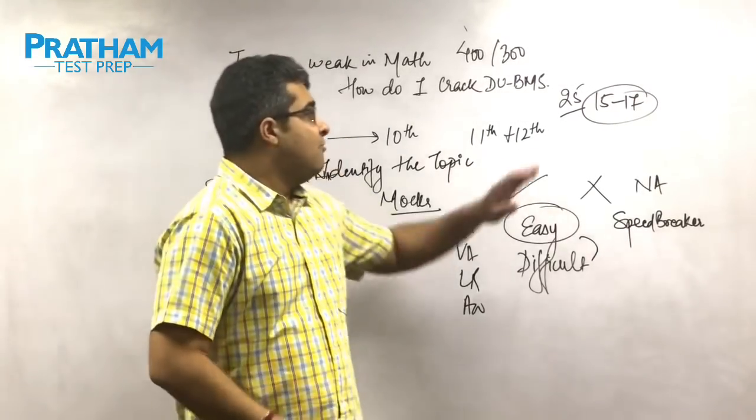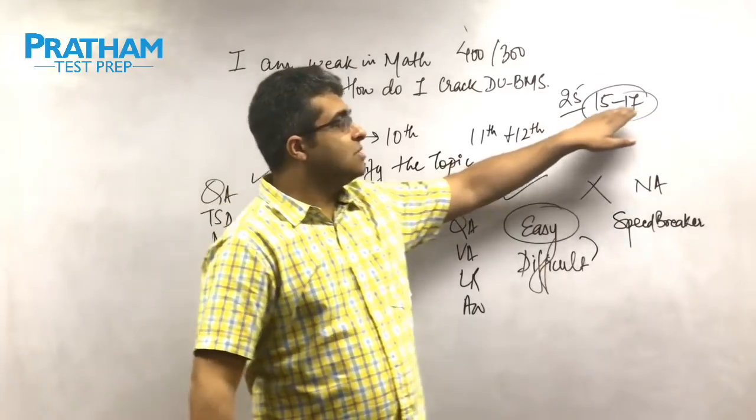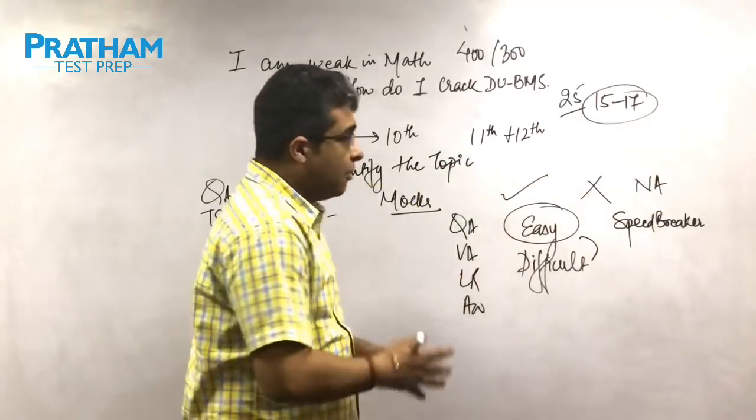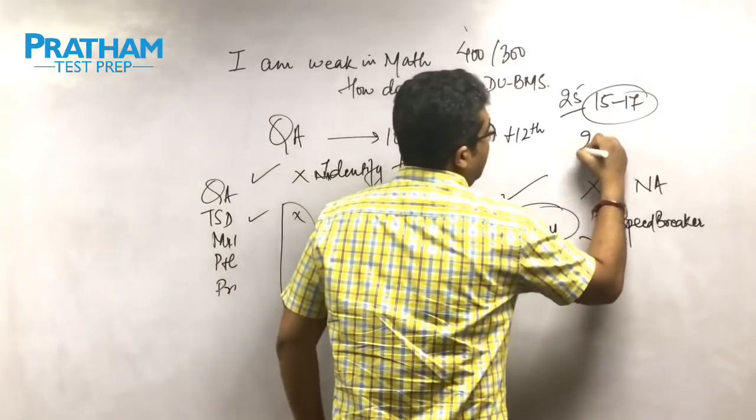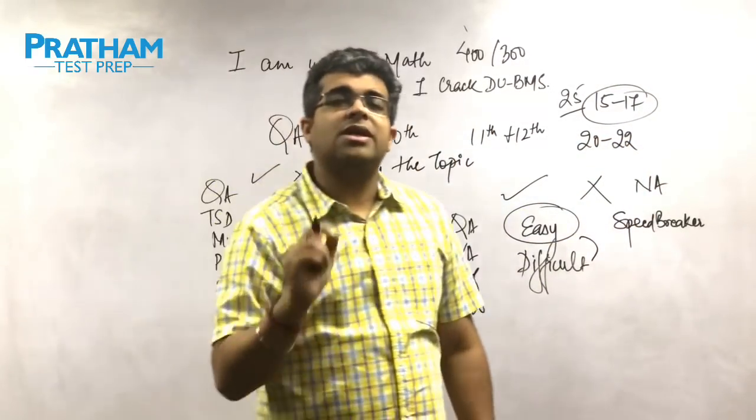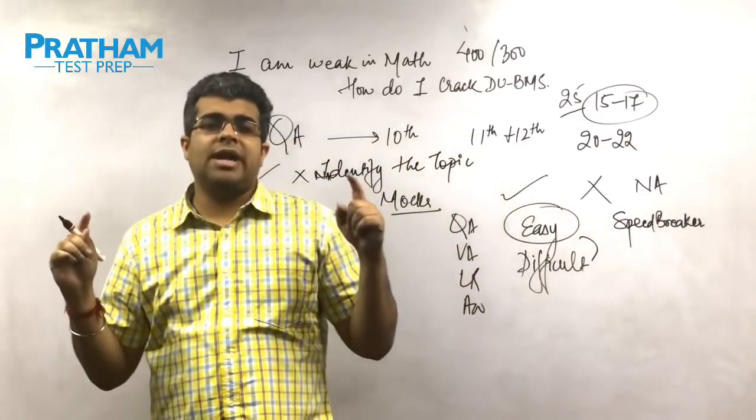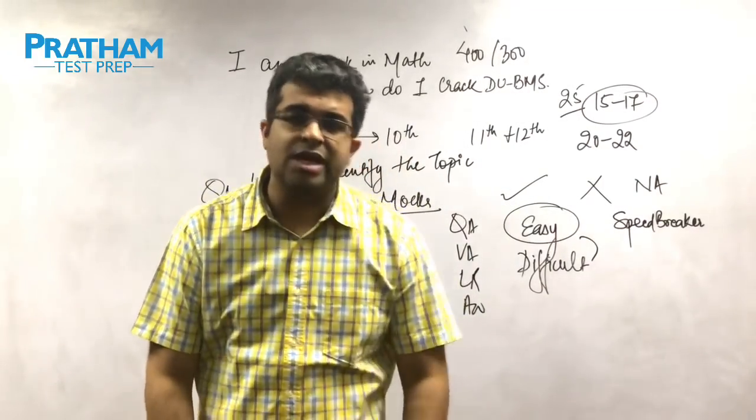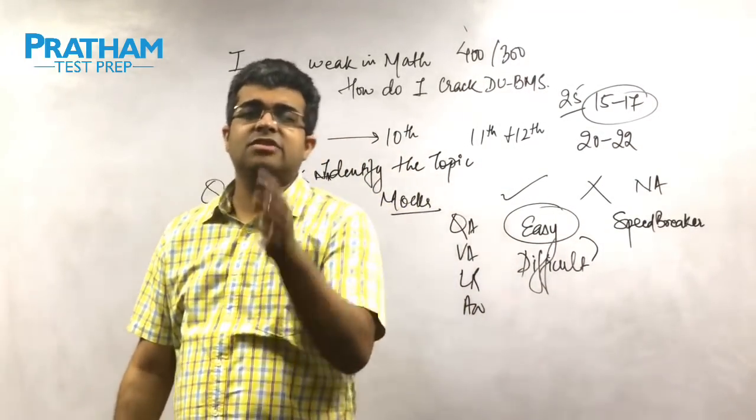For out of 25, I'm saying 15 to 17 is what you need to do correctly. If you're very good at it, then the number should be about 20 to 22. We are not here saying that we have to get all 25 questions right. No, we have to get 15 to 17 questions right only.